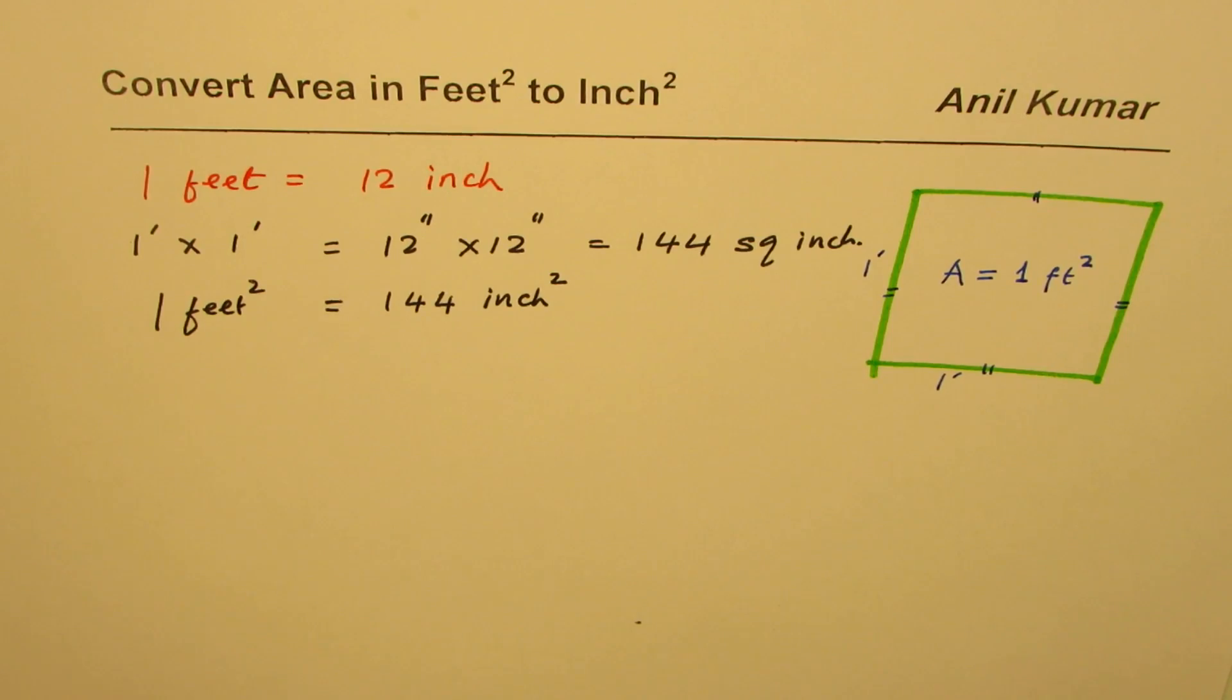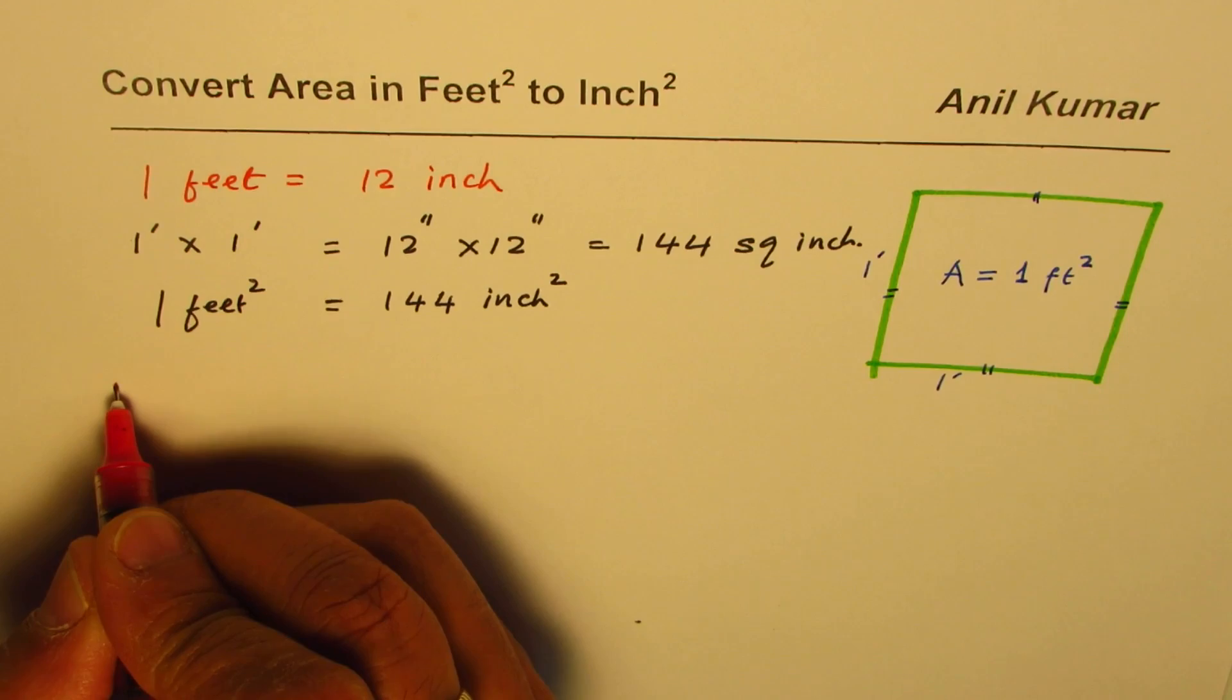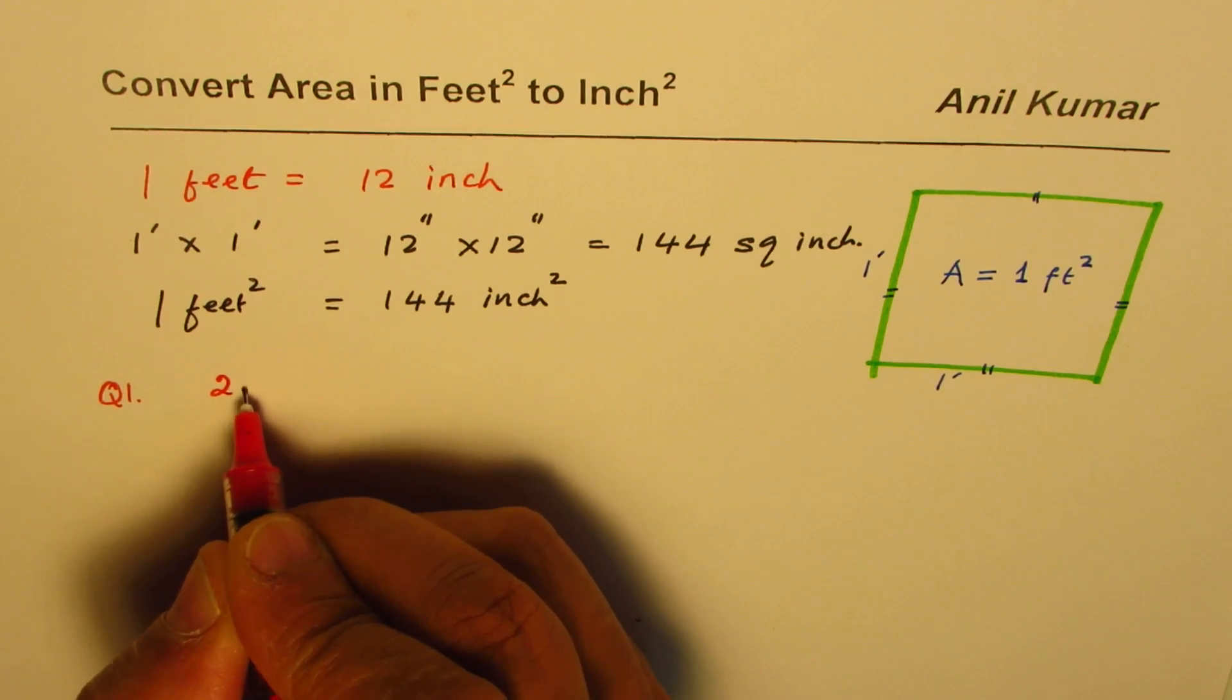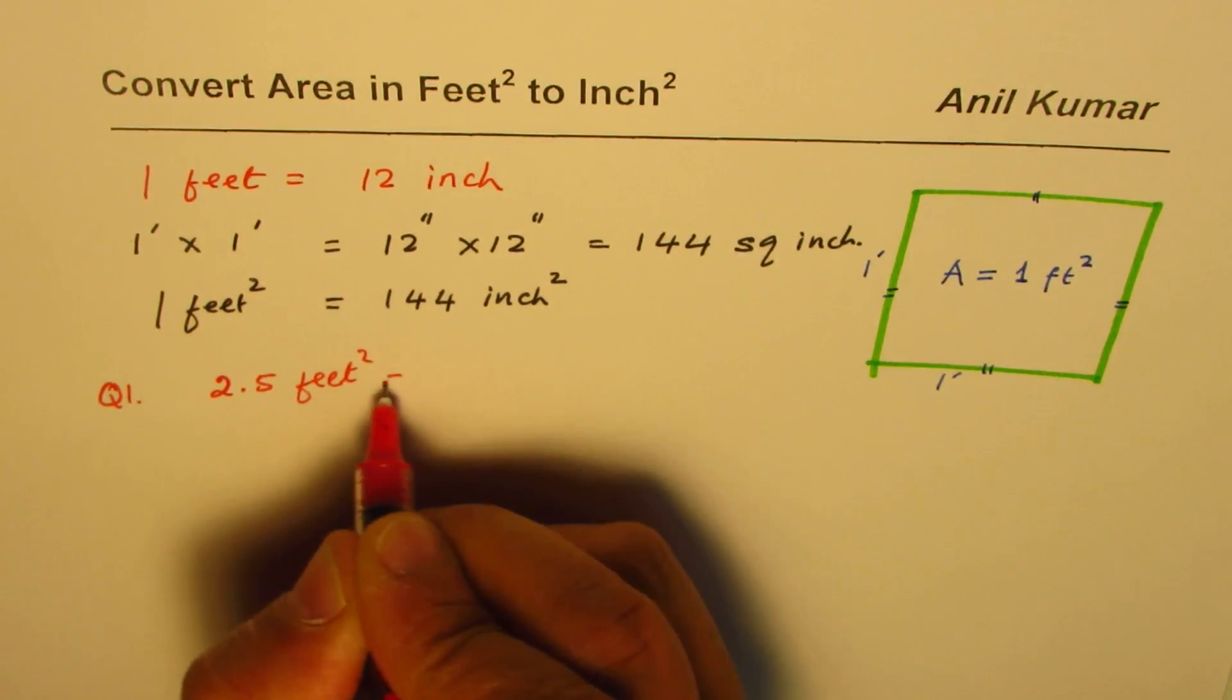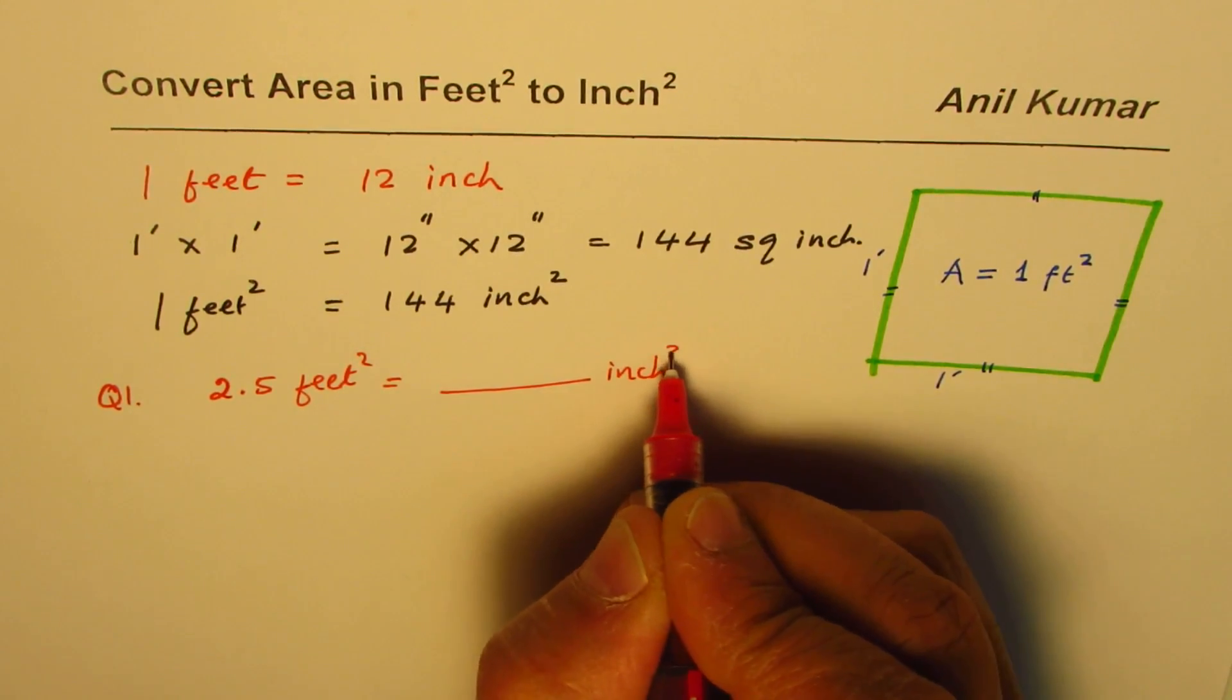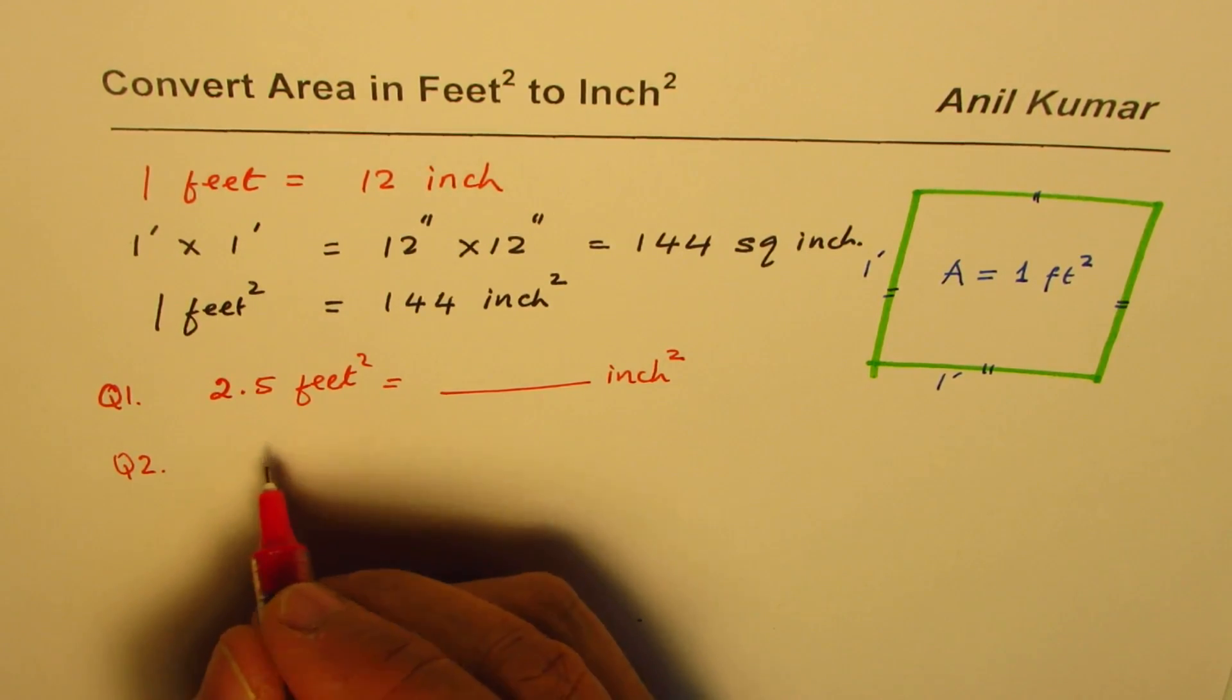Now for practice, here are some questions. Question 1: Convert 2.5 square feet to square inches. Question 2: Convert 0.10 square feet to square inches.